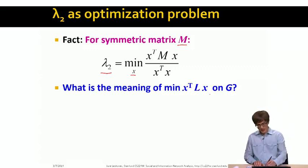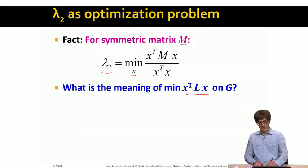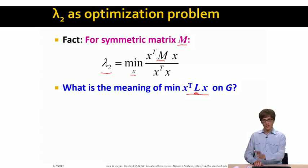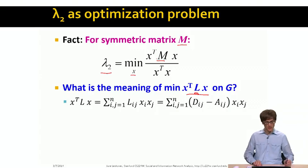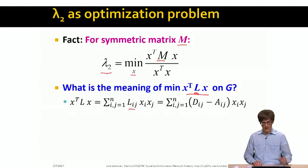Now let's ask what is the meaning of X transpose L times X in our case of the graph Laplacian, where L plays the role of matrix M. What is the meaning of this expression, where I take a vector of entries X, multiply it with L, and then multiply the whole thing again with X from the left side? Let's write this out. X transpose times L times X is simply a double summation over i and j, where I take Lij times Xi times Xj. Instead of writing Lij, let's write out the definition of L.